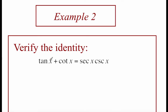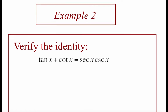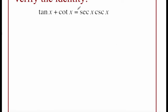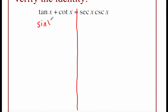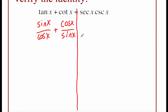Here's our next example. We've got tangent of x plus cotangent of x equals secant of x times cosecant of x. Just like before, I'm going to draw this vertical line down the equal sign to remind ourselves we can't cross over it. I'm going to work on the left-hand side: tangent of x is the same as sine over cosine, and cotangent is just the opposite — cosine of x over sine of x.